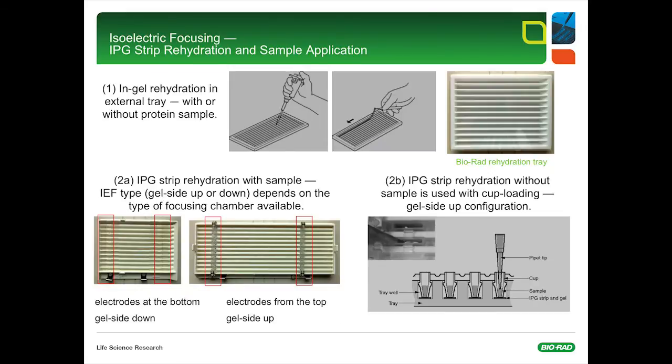In principle, IPG strip rehydration is very easy. Simply pipette the rehydration solution with or without sample along the center of the channels of the rehydration tray. Next, remove the cover sheet from the IPG strip with forceps, and then gently place the IPG strip gel side down onto the solution in the channel. Please take care not to trap any air bubbles beneath the IPG strip.